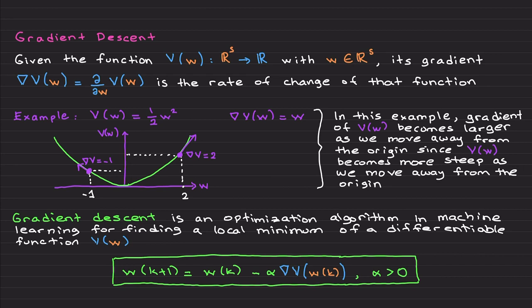Gradient descent is essentially an optimization algorithm in machine learning and control theory for finding a local minimum of a differentiable function. We need the function to be differentiable because we need to take the derivative. In gradient descent, we find the new value of the unknown parameter iteratively.